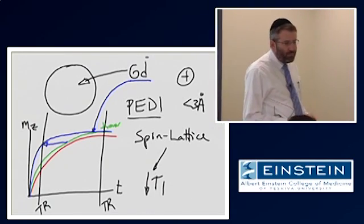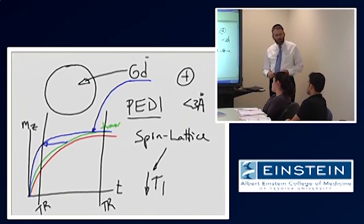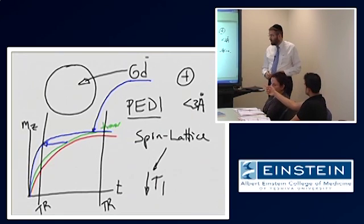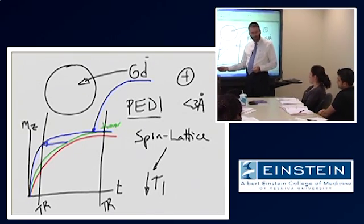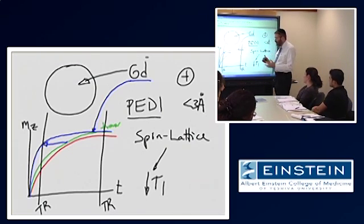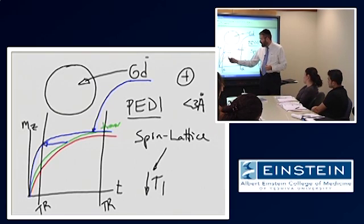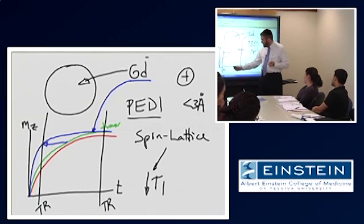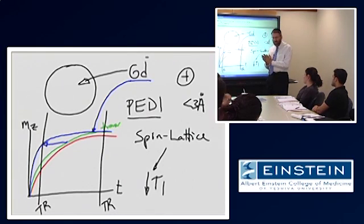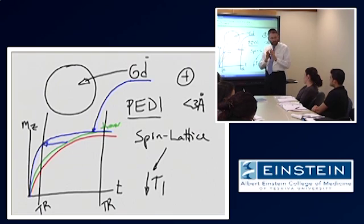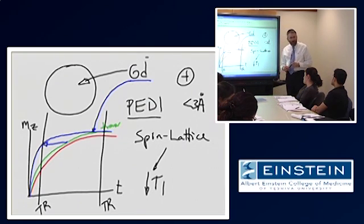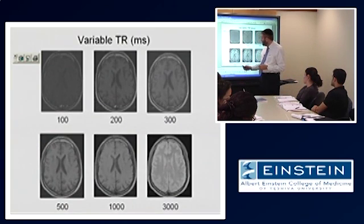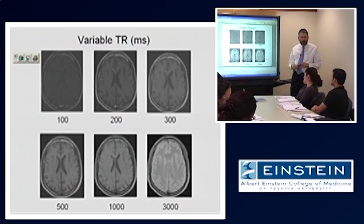Student asks: I know before we were saying to decrease the TR all the way to optimize T1, but in this case you wouldn't be optimizing the tissue differences at an extremely low TR because they would all be almost the same. Instructor responds: You're correct that you could decide where you're going to have the maximum contrast. It's not going to be at zero because everything is the same at zero. It takes time for there to be some differentiation of those spins. But keep in mind that imaging with a TR this short wouldn't really be very practical because when your TR gets very short, there isn't much signal there to start with.